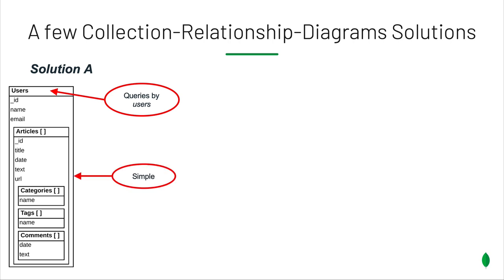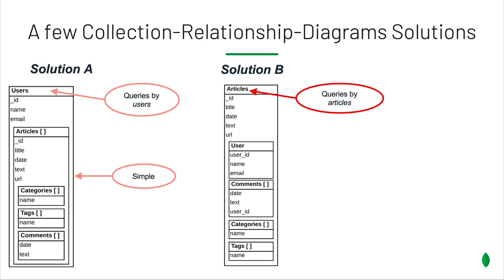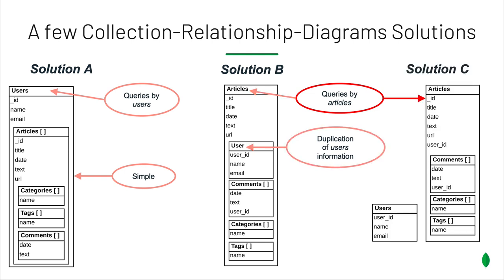Another solution may be — let's say we have a system making a lot of queries on articles. The main entity could be the articles, in which we put the information about the user and all the information about the articles. In this case, we get duplication of user information. If that's not something we want, a third solution is again oriented toward articles, where we keep all the information about the articles within this collection but have a separate collection for the users, avoiding duplication for users.